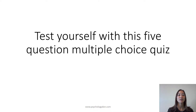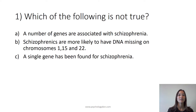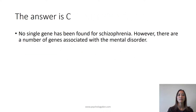Now test yourself with this five-question multiple-choice quiz. Question 1: Which of the following is not true? A: A number of genes are associated with schizophrenia. B: Schizophrenics are more likely to have DNA missing on chromosomes 1, 15 and 22. Or C: A single gene has been found for schizophrenia. The answer is C — no single gene has been found for schizophrenia; however, there are a number of genes associated with the mental disorder.